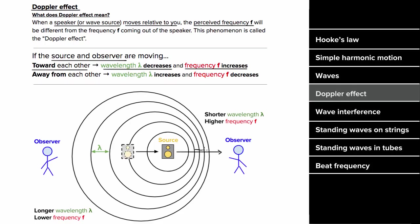Since the crests are closer together, the wavelength is smaller, and the rate at which these crests hit the observer is higher. So this observer hears a higher frequency than is actually being played by the wave source at rest. For the observer on the trailing edge, since the source is moving away, the crests are spaced further apart, increasing wavelength and decreasing the rate at which crests hit the observer — so that observer hears a lower frequency.